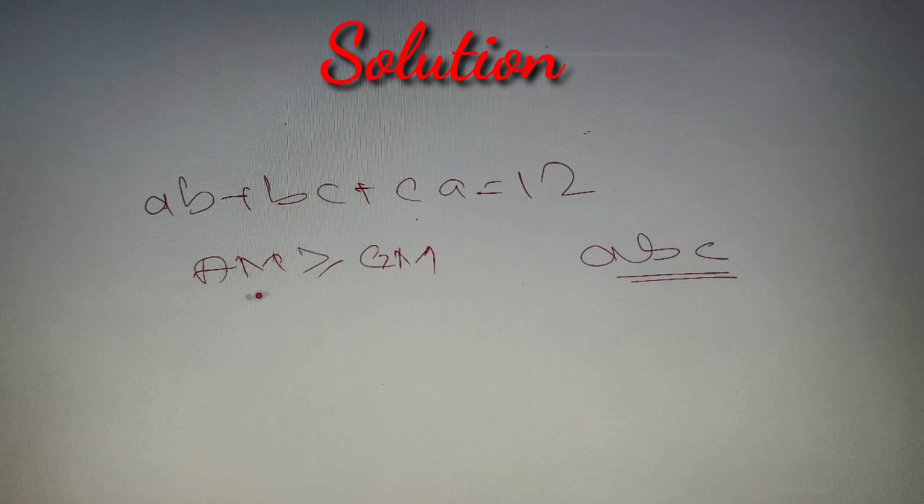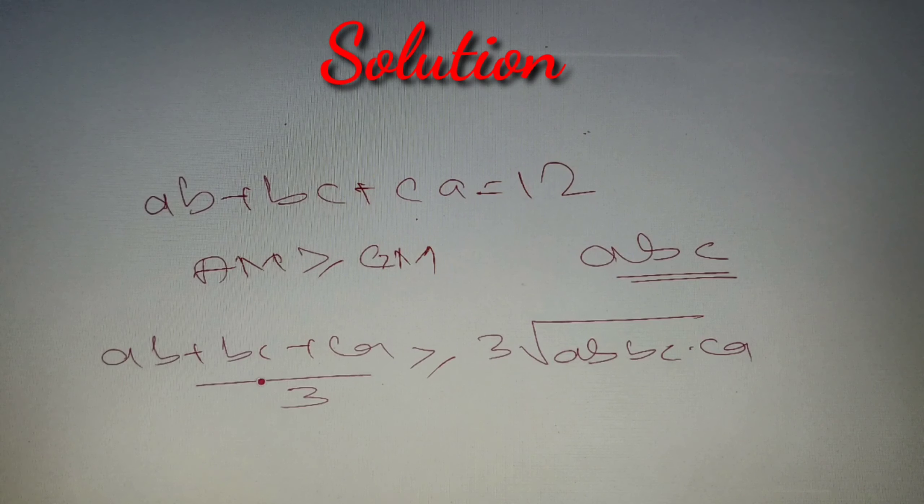Now if we use this property that AM is greater than or equal to GM, then we can say that (ab + bc + ca) divided by 3 is always greater than or equal to the cube root of ab × bc × ca. Now ab + bc + ca is given as 12.